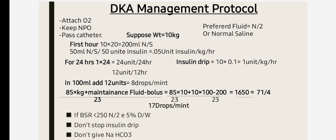After doing the calculation, the answer would be 71. Divide this by 4 — which is the constant for drip rate — so you start the second drip at a rate of 17 drops per minute.